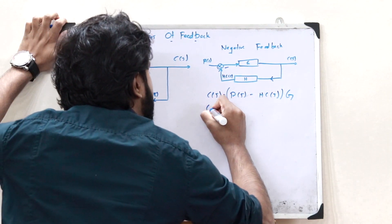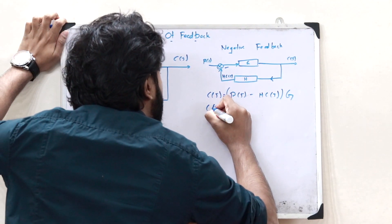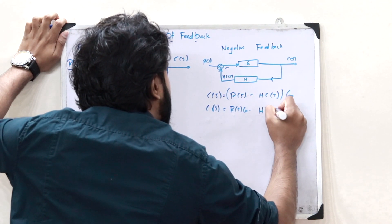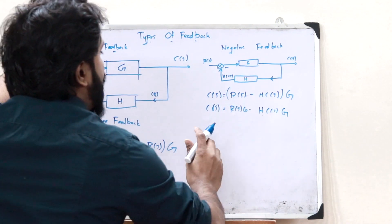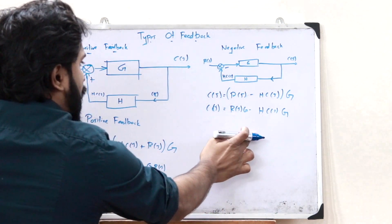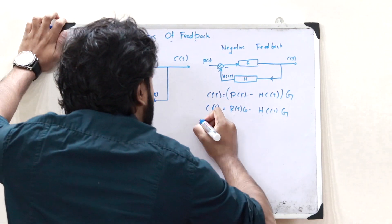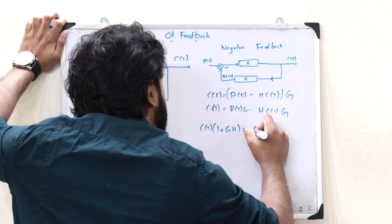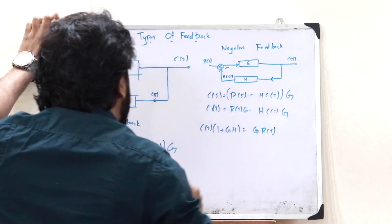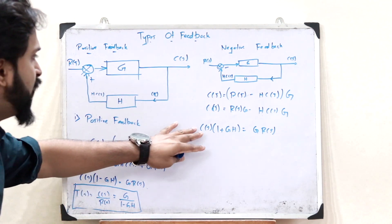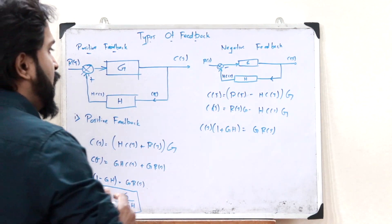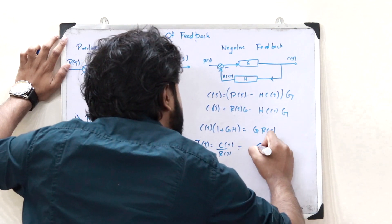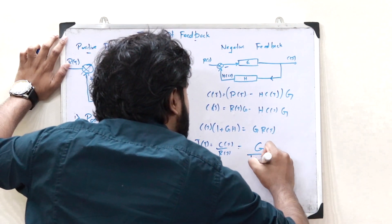On expanding this, we get C of S equals R of S into G minus H into C of S into G. Taking the C of S terms to one side, we get C of S into (1 plus GH) equals G into R of S. Therefore, the transfer function is given as C of S divided by R of S, so T of S equals G divided by (1 plus GH).